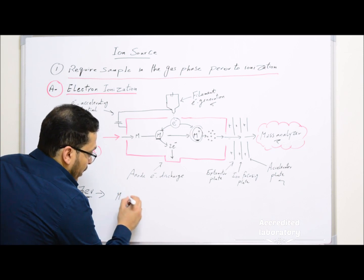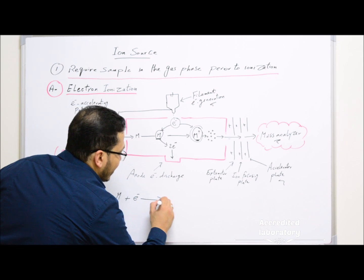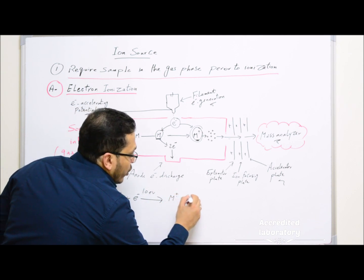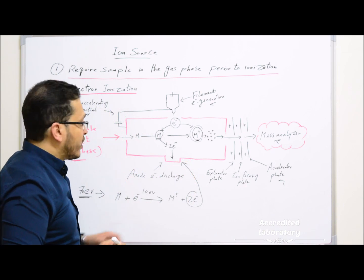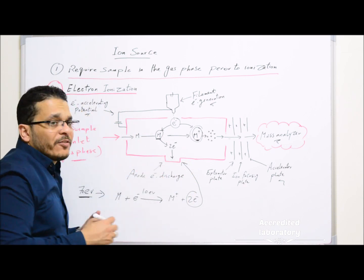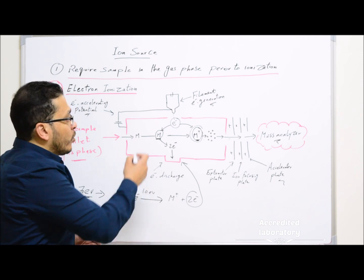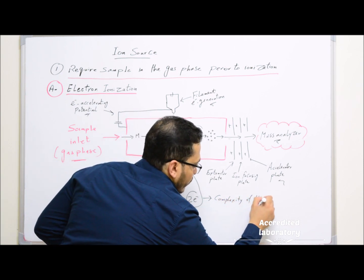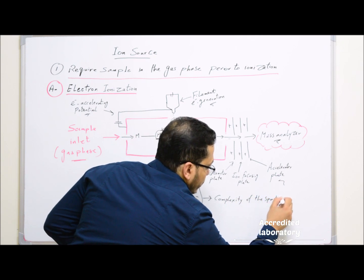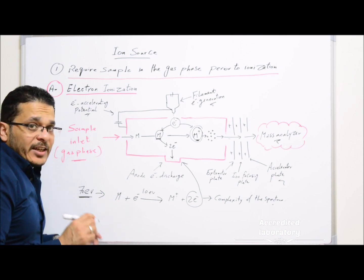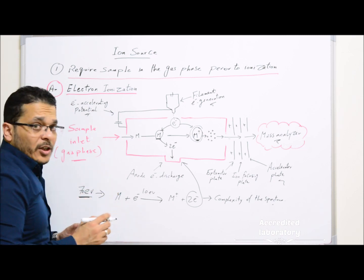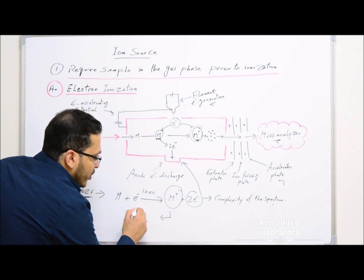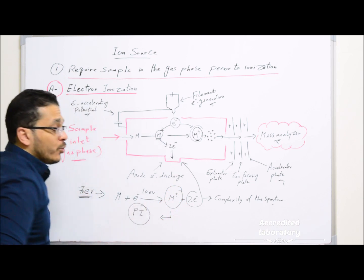The molecule plus an electron, using sufficient energy of about 10 electron volts, forms a molecular ion plus two electrons. These two electrons will be collected or discharged at the anode to prevent further reactions with the molecule that would add complexity to the spectrum. After that, excess energy of electrons causes fragmentation of the molecular ion to form a series of product ions which are unique for the molecule.